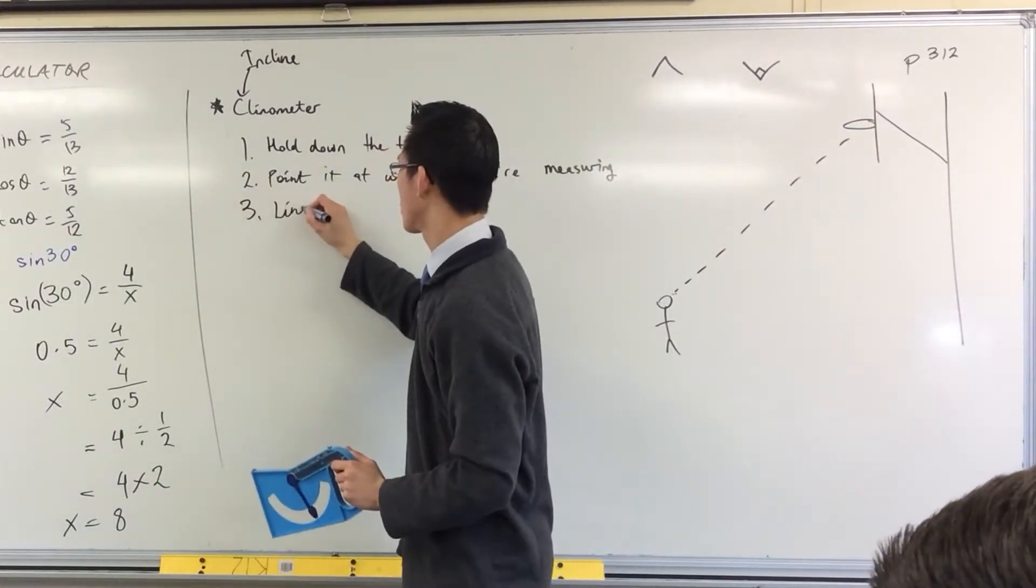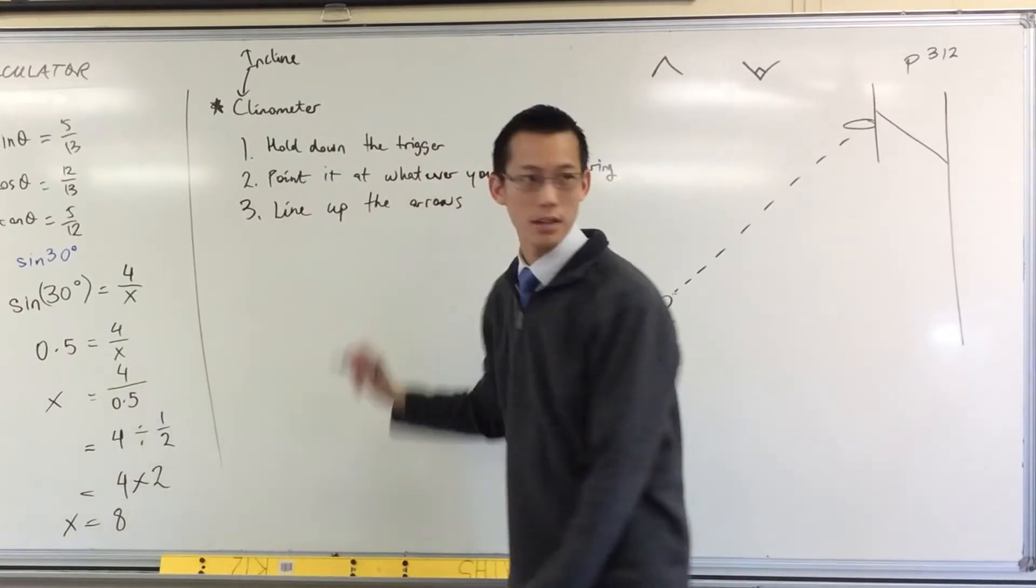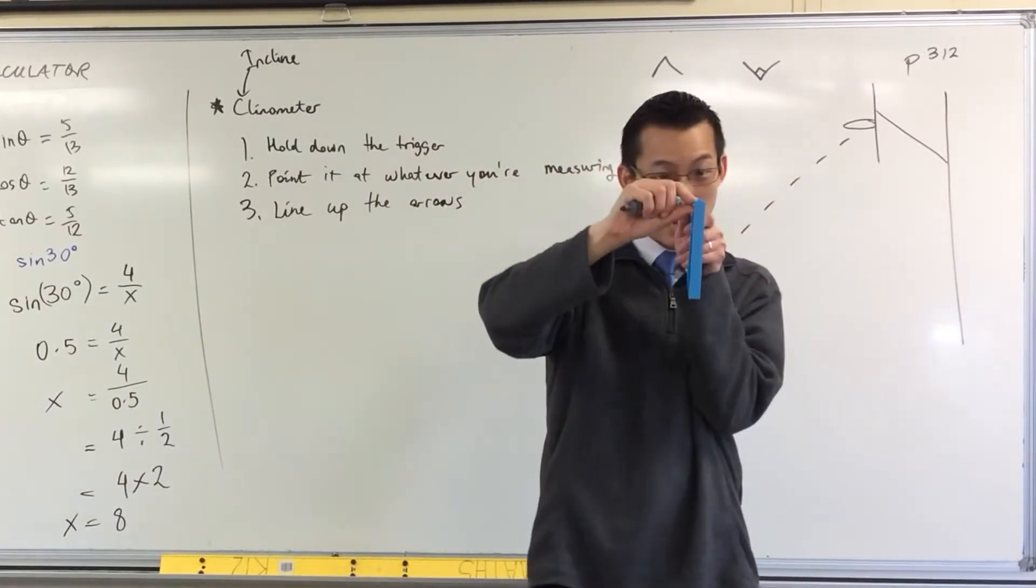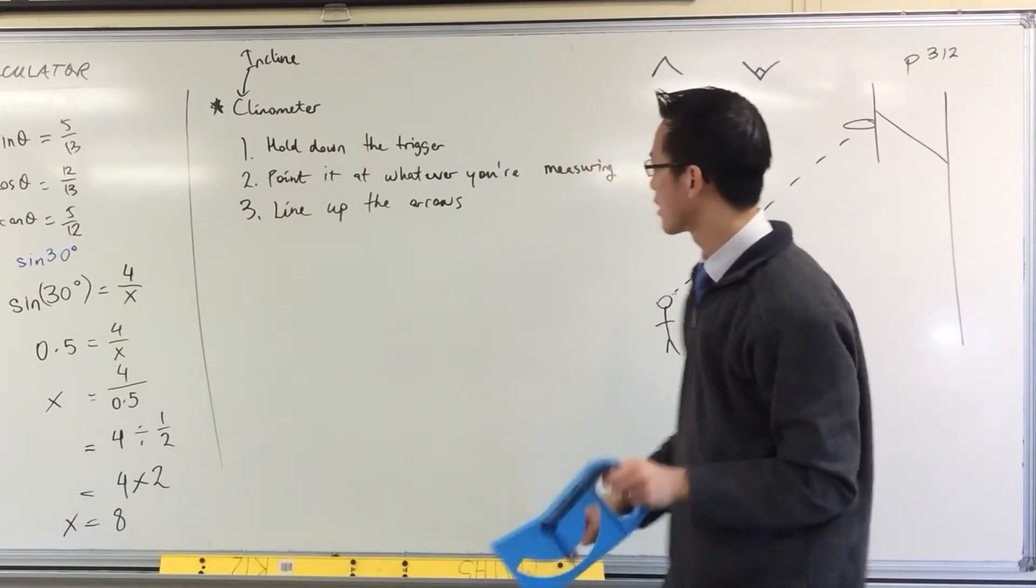So you want to line up the arrows. That's how you get precise. Line up the arrows. So there's the pointing up arrow and then there's the pointing down arrow. So you want them to line up in your line of vision.